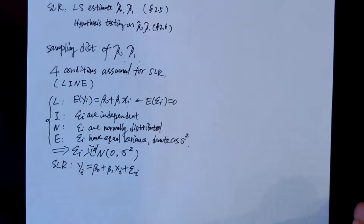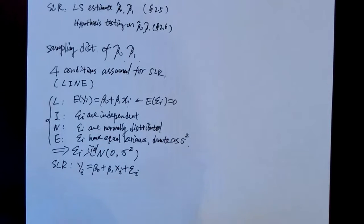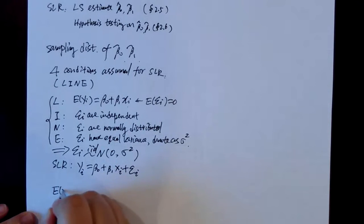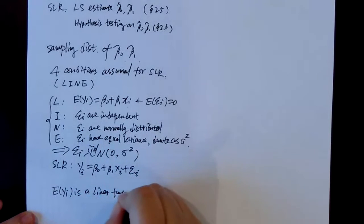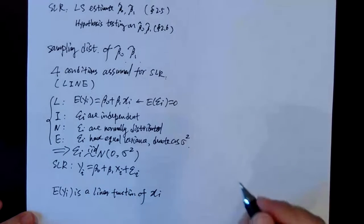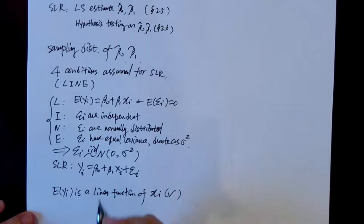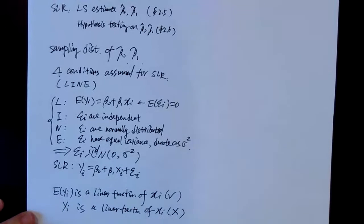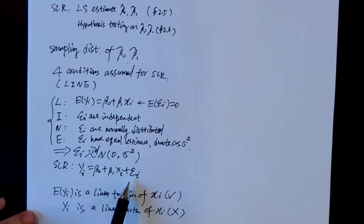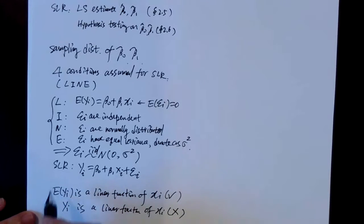With these conditions, it is correct to say that E(yi) is a linear function of xi. However, it is not correct to say yi itself is a linear function of xi, because yi has epsilon-i in it, which is a random variable. So you must say E(yi) is a linear function of xi, not yi directly.